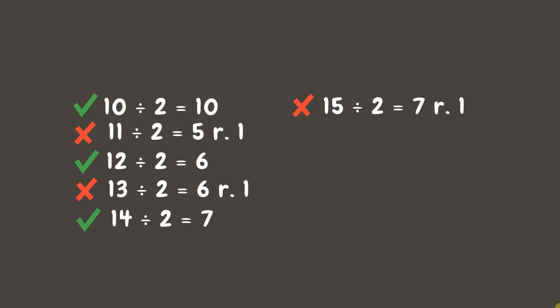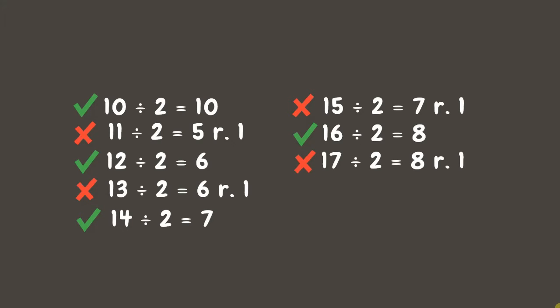16 divided by 2 is exactly 8, so 16 is divisible by 2. 17 divided by 2 is 8 with a remainder of 1 — not divisible. 18 divided by 2 is 9, so it is divisible by 2. 19 divided by 2 is 9 remainder 1 — since there is a remainder, it is not divisible by 2.